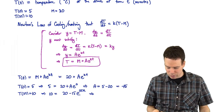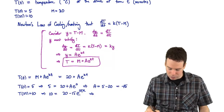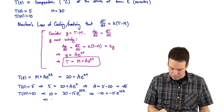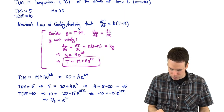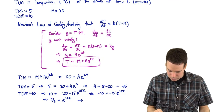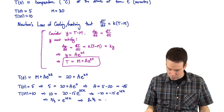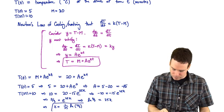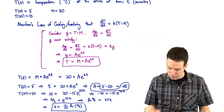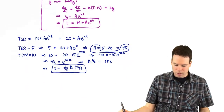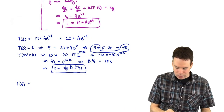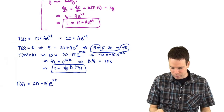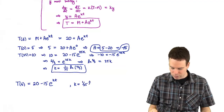We take logarithms of both sides: ln(2/3) = 25k, so k = (1/25)ln(2/3). We now have both constants A = -15 and k = (1/25)ln(2/3), and our temperature function modeling the drink is T(t) = 20 - 15e^(kt), where k = (1/25)ln(2/3).